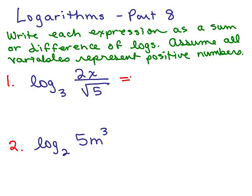So what we have to start with, with number one, is a quotient. So I'm going to begin by doing subtraction. That gives me log base 3 of the numerator which is 2x minus the log base 3 of the denominator which is square root of 5.